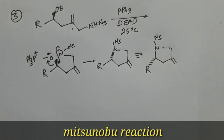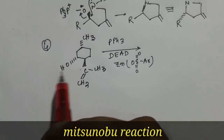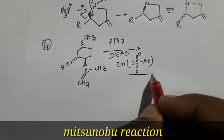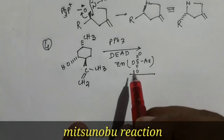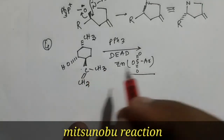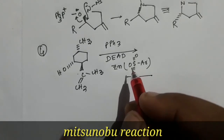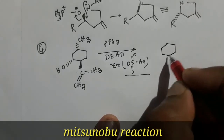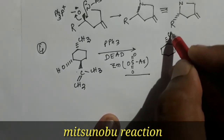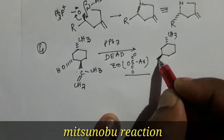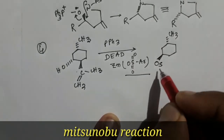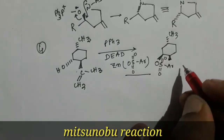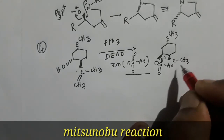Another example of the Mitsunobu reaction: an alcohol is present below the plane and the nucleophile is a sulfonate. So the sulfonate will appear in the product above the plane. The reaction product contains a methyl group and the sulfonate above the plane, along with C-CH3 and a double bond CH2.